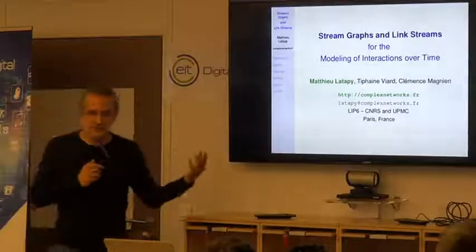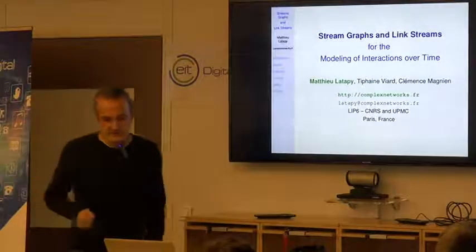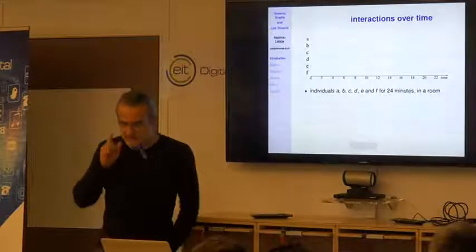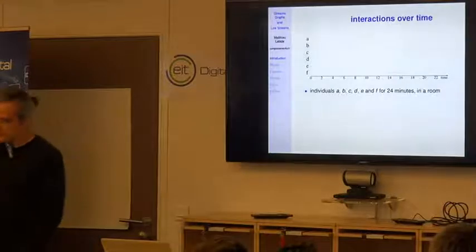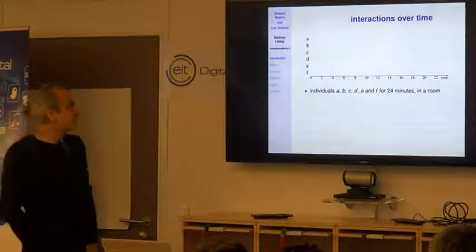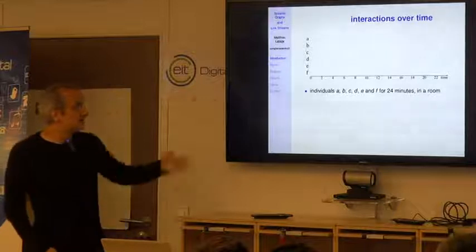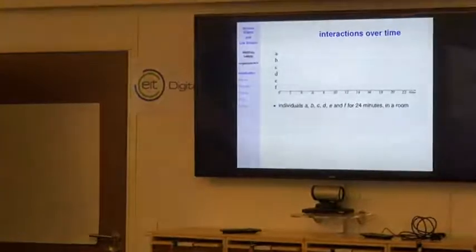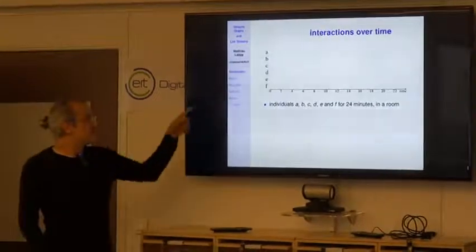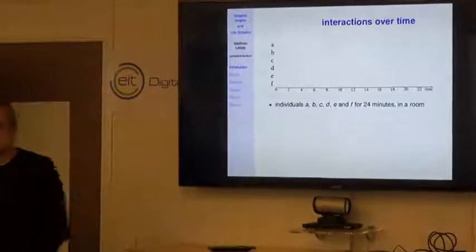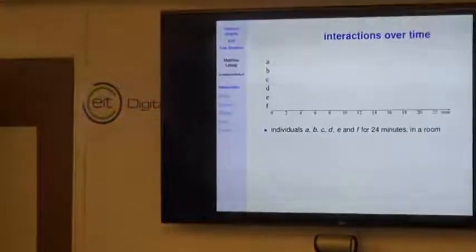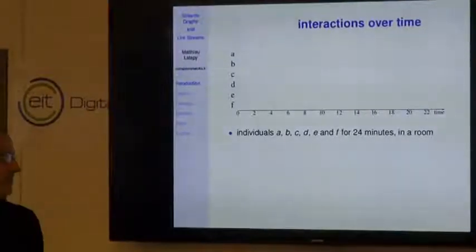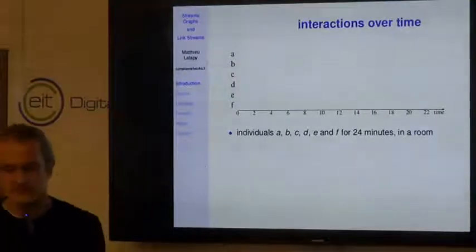We are interested in interactions between objects and want to account for time dynamics. Let me start with a simple example. We want to observe the interactions between six individuals, modeled as six nodes A, B, C, D, E, and F, observed during a time period of 24 minutes, represented on the horizontal axis.